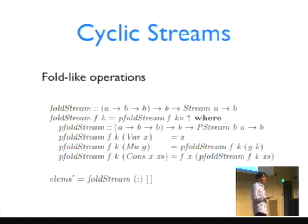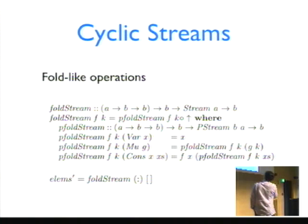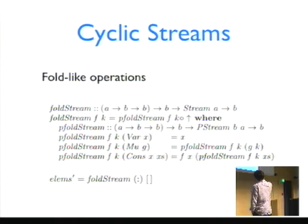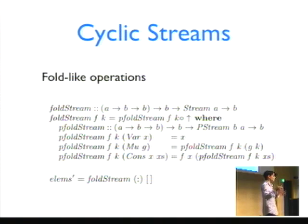What kind of operations can you define with these streams? One type is a fold-like operation, similar to a fold on lists, with the same signature — a function that deals with the cons case and a second argument that, instead of handling an empty case, handles the variable case by substituting a constant k in all variable positions. One thing you could define is something that computes the elements out of a cyclic stream — for the stream 1, 2, 1, 2 you compute the pair 1, 2.